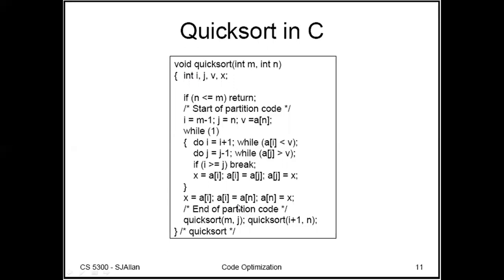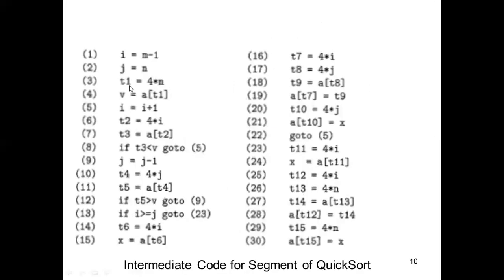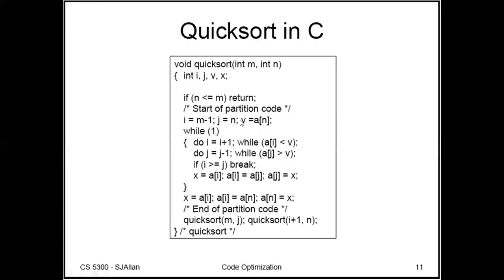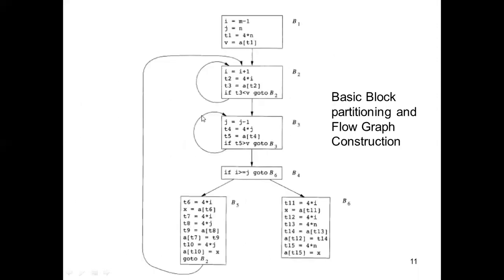First, you have to convert the quicksort example into three address statements. The first statement is i = m - 1. Second: j = n. Third: v = a[n]. Since n is an integer variable occupying four bytes, you write t1 = 4 * n, then v = a[t1]. Next, i = i + 1. For a[i], since i occupies four bytes, you have t2 = 4 * i, and t3 = a[t2]. Then check: if t3 < v, go to statement 5.